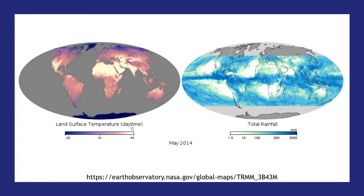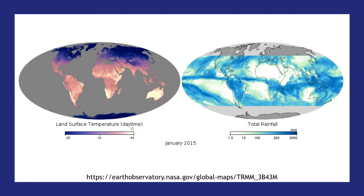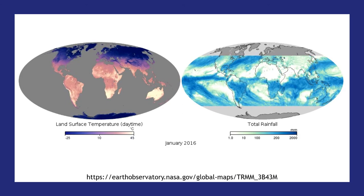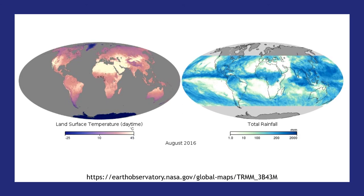Then when we go into November and December, the warm regions are in the southern hemisphere and the rain belt moves south of the equator. This is a lovely way to see how Earth's temperature and precipitation change with the seasons as we warm in the northern or southern hemisphere during the summer.